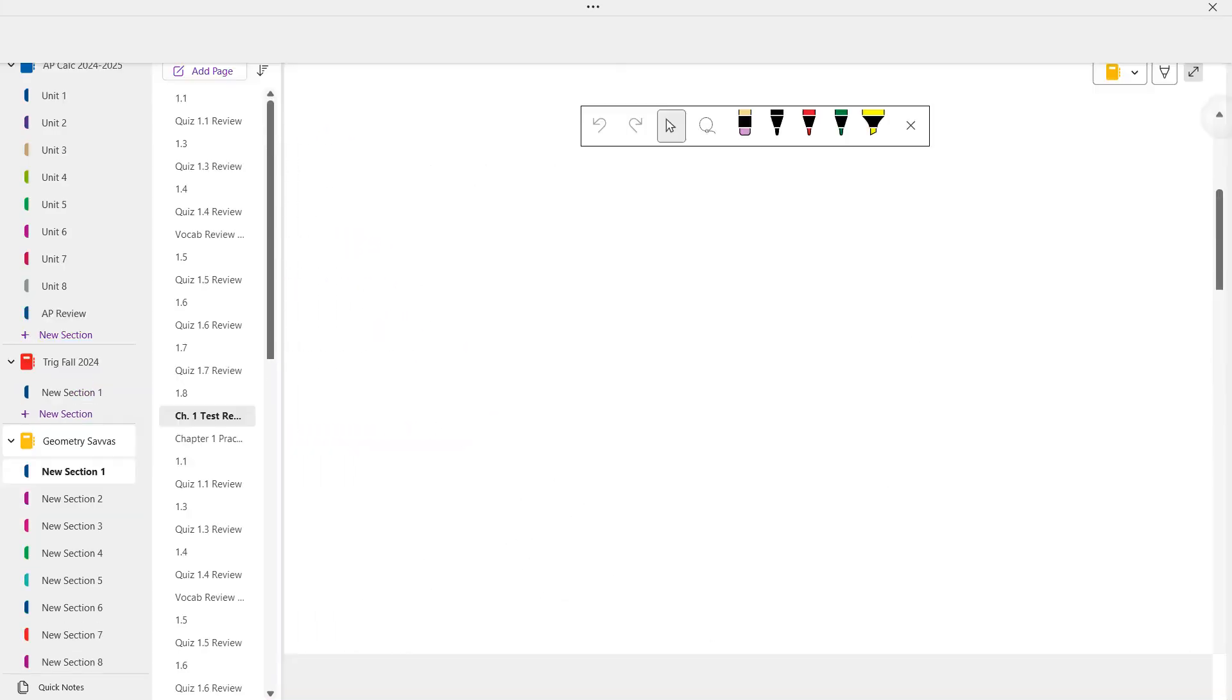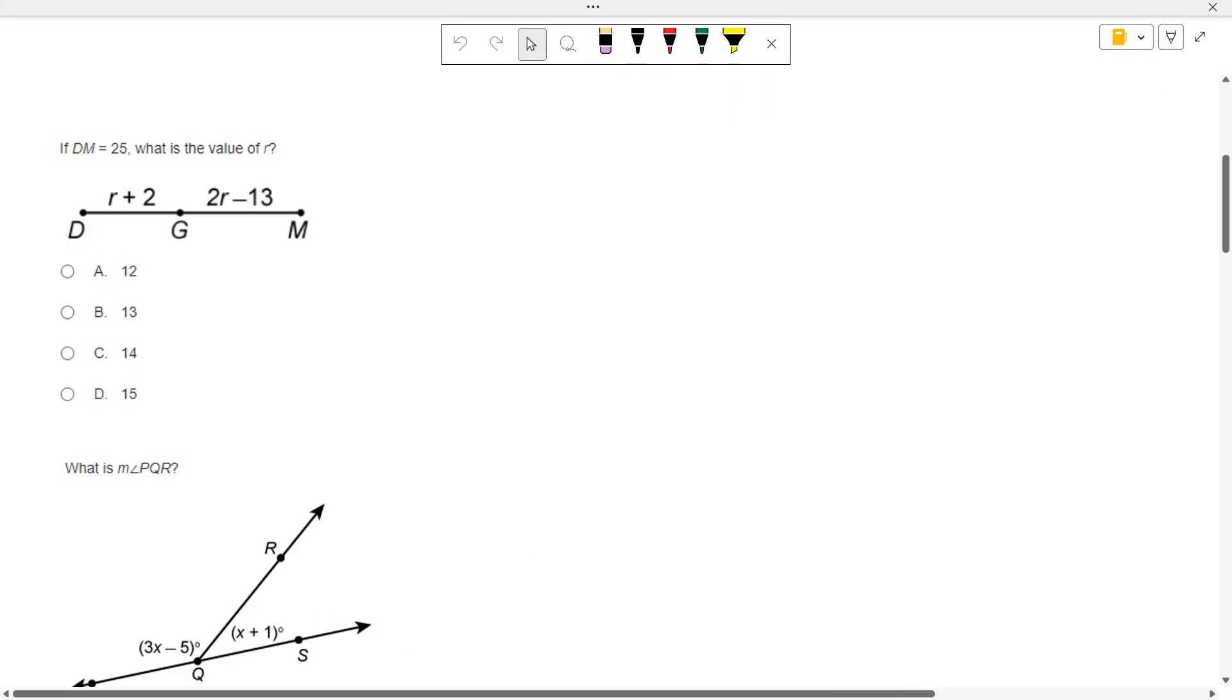Alright, so if DM is 25, how do we find the value of R? What would you do? Now, some of you, because it's multiple choice, would take the answers and plug them in until you found the right answer. Okay, that would work. But what else could we do?